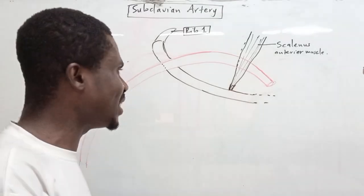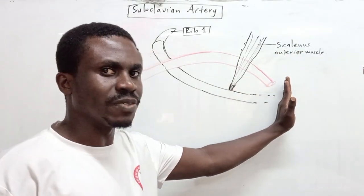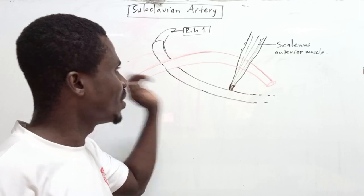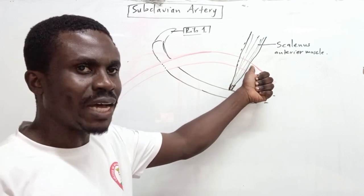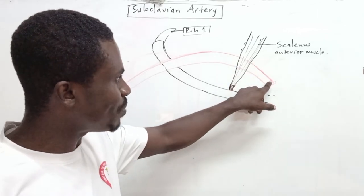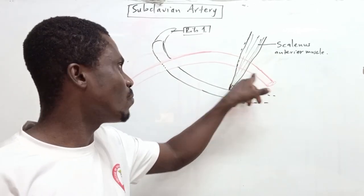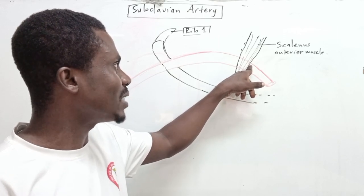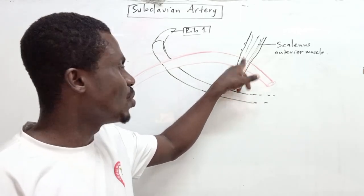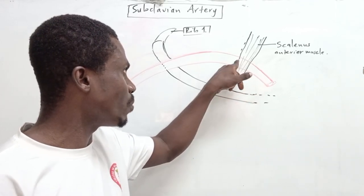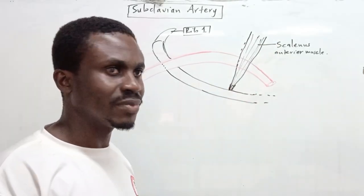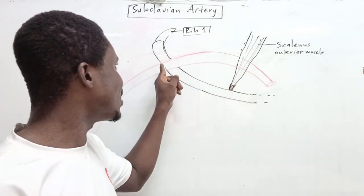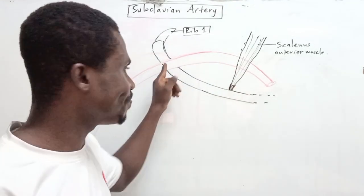The subclavian artery has three parts. The first part is medial — from the origin to the medial border of the scalenus anterior muscle. The second part is deep to the scalenus anterior muscle — from the medial border to the lateral border of that muscle. The third part runs from the lateral border of scalenus anterior to the outer border of the first rib.